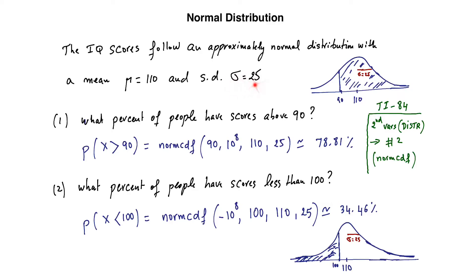The first thing you should always do is draw a picture — draw a bell-shaped curve and label it IQ or X. Show where the mean lies. These are the only two things you need to answer any question: if you know a random variable follows a normal distribution, you just need two parameters — the mean of the population and the standard deviation.